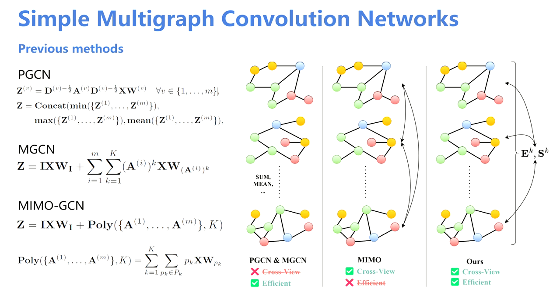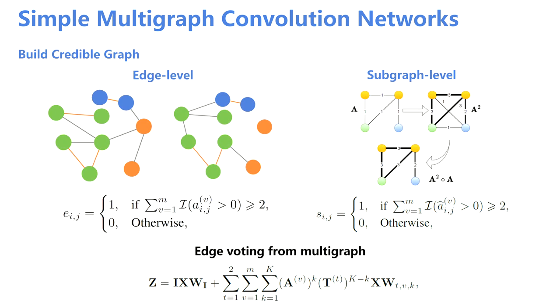Therefore, we are motivated to propose a new method which is simple and effectively performs cross-view interaction. Our main principle is to build a credible graph. We construct two kinds of credible graph: edge-level credible graph and subgraph-level credible graph.